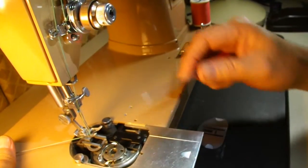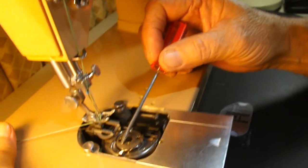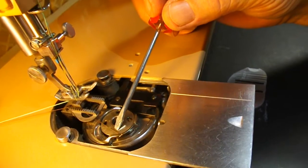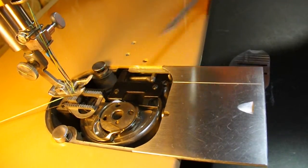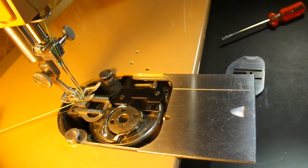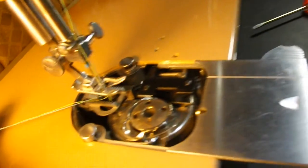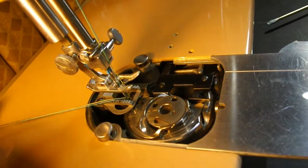I'll just turn the wheel by hand. So I have my two upper threads. There you can see the bobbin thread right there. And as I start to see this, you'll go down. There we go.